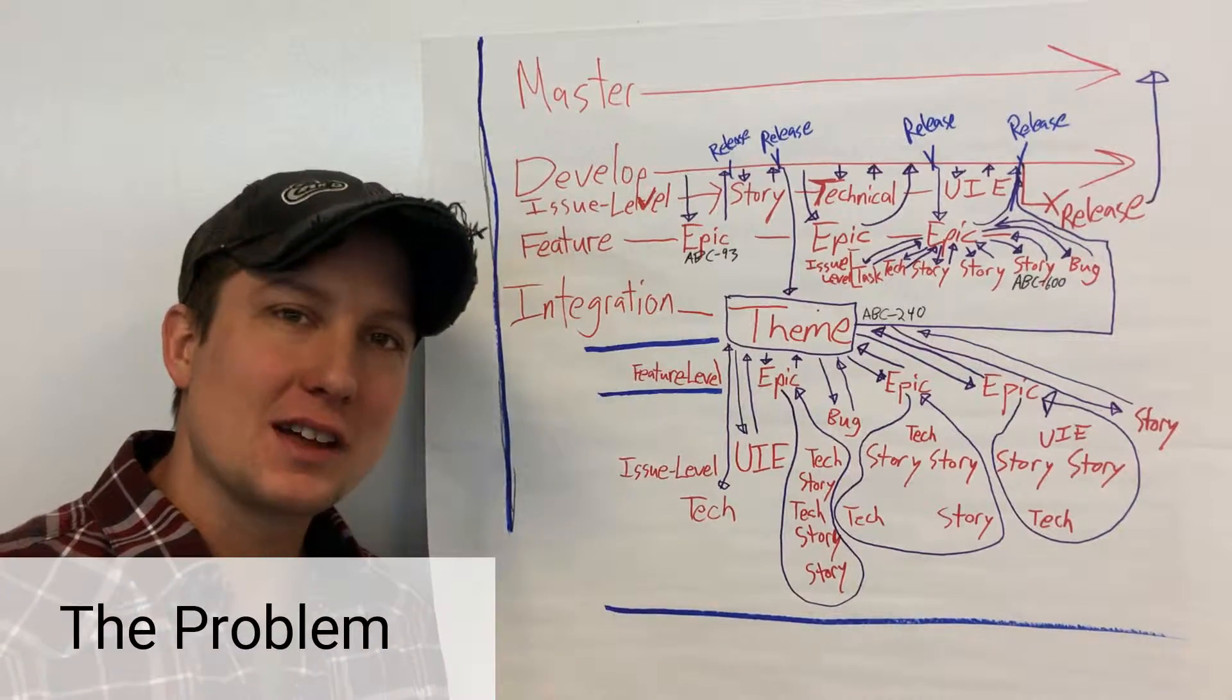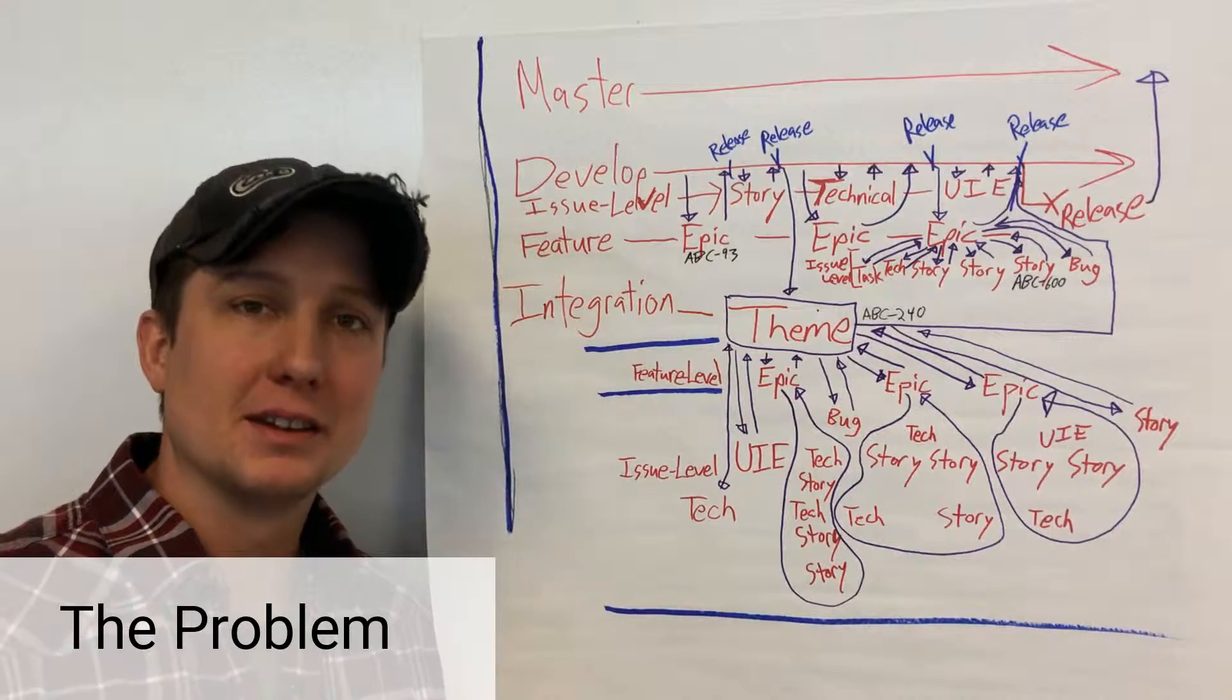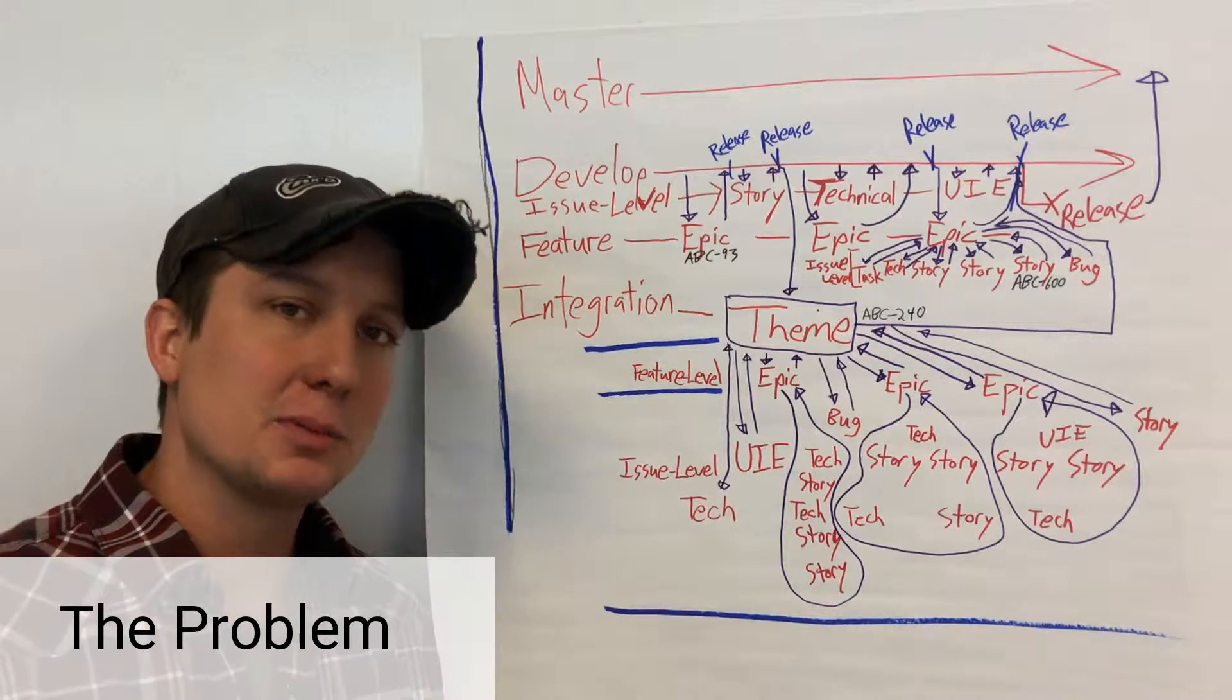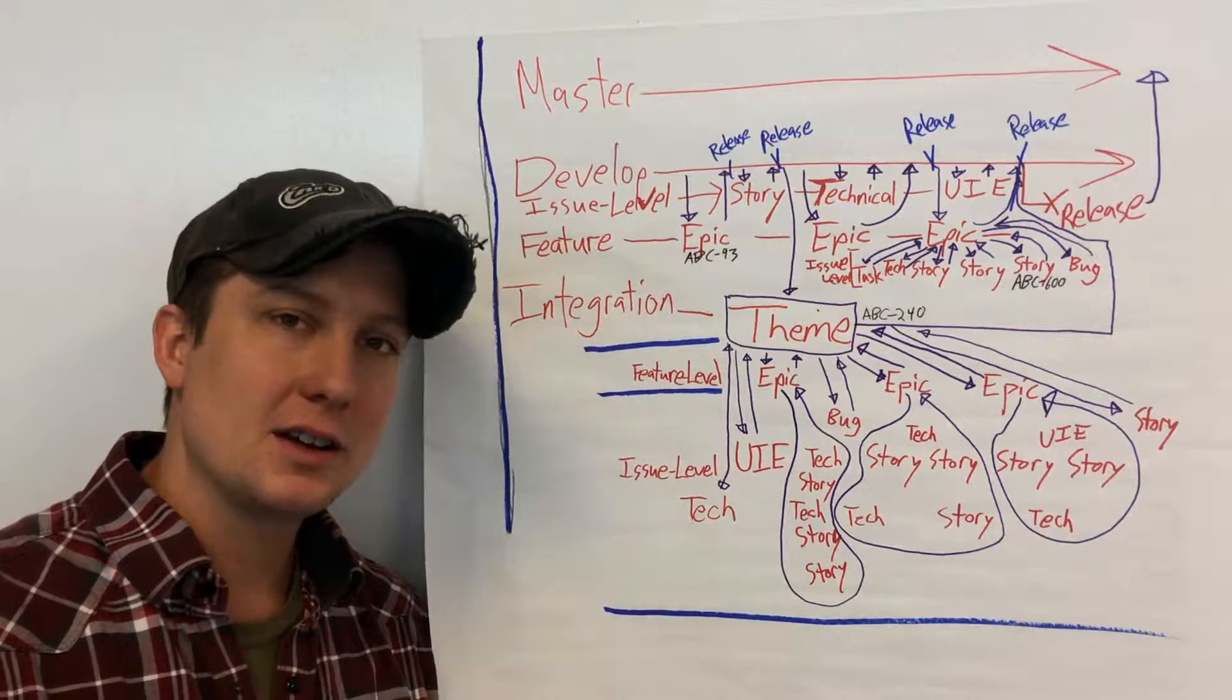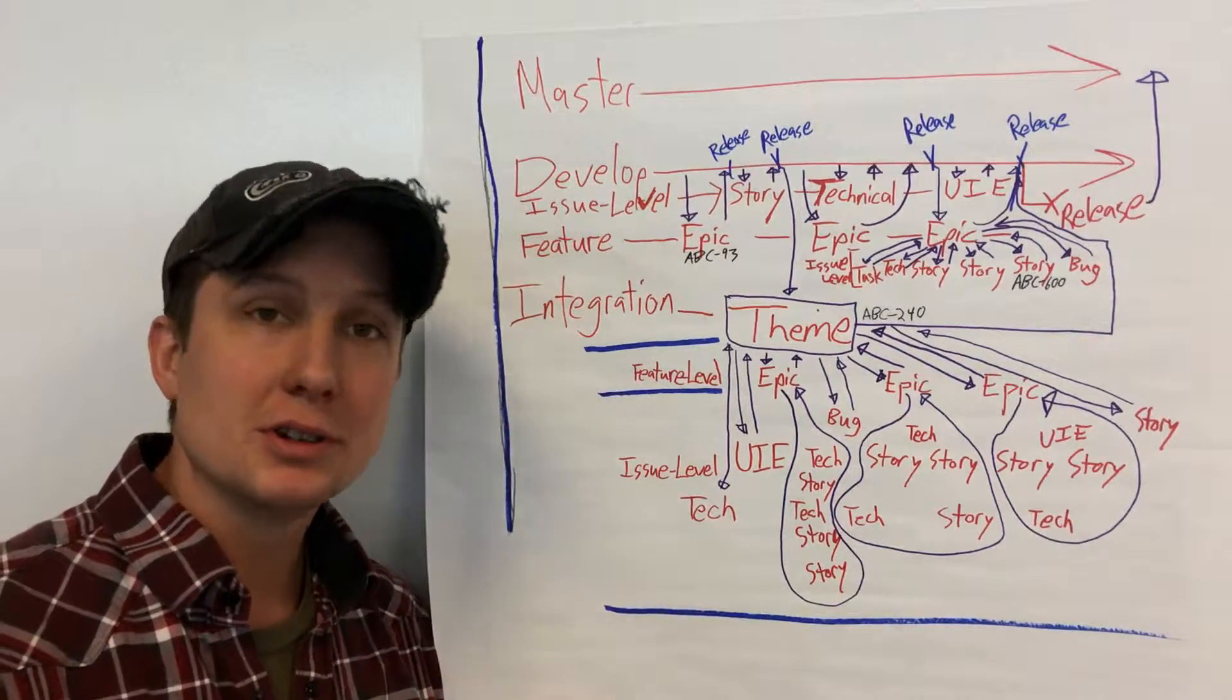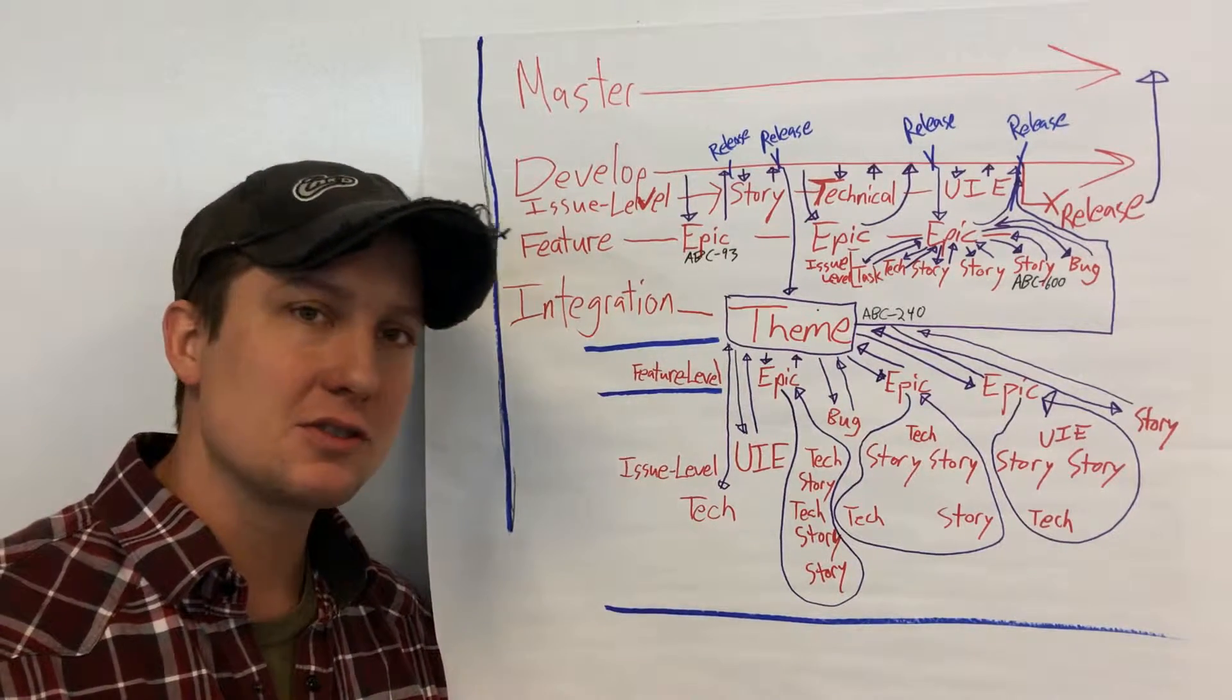Core Scrum assumes that the product increments you're going to build are independent. They're independently valuable when you supply them to the market on their own, and they're independently manageable during the development process. You can build it separate from other things, there's no dependencies.